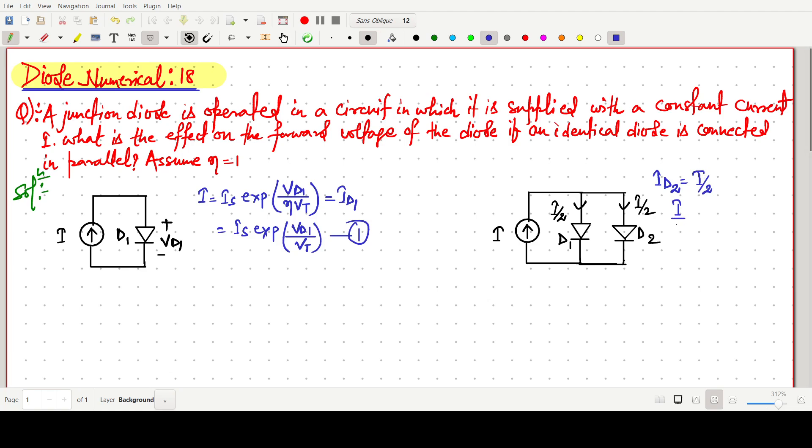The Id2 current in this one will be I by 2. And this I by 2 is nothing but simply, again we can write the expression for the diode equation: Is exp VD2 by VT. This one is equation number 2.